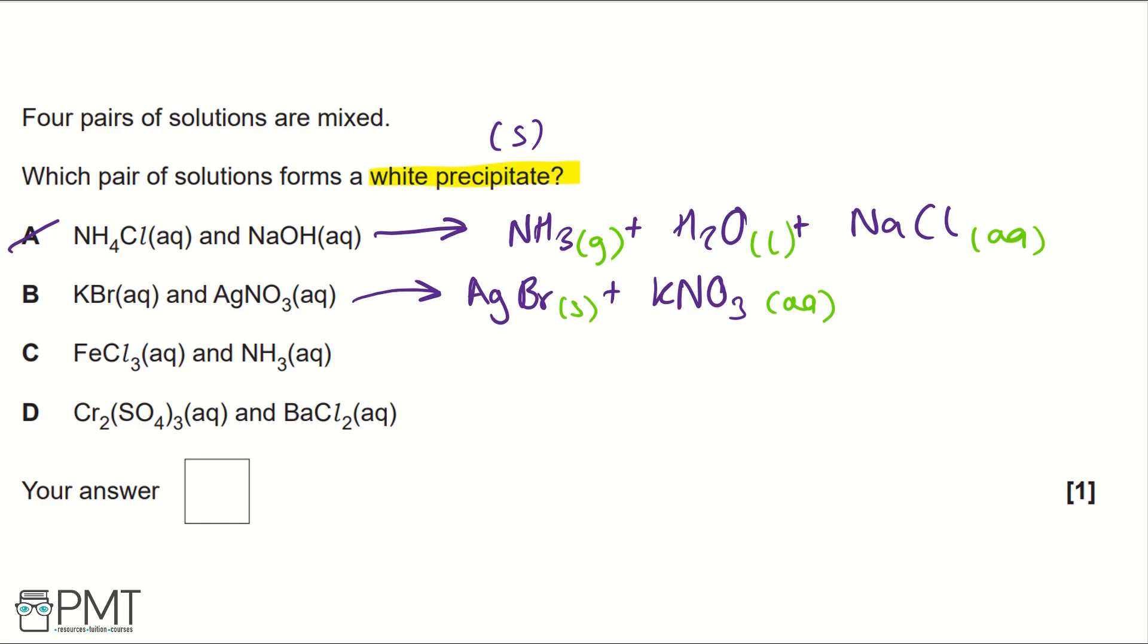If we move on to C, we would form FeOH3, or iron 3 hydroxide, and ammonium chloride.